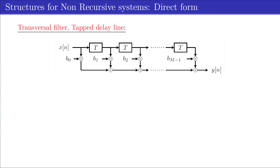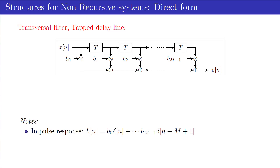The most common form of a non-recursive filter is the so-called transversal filter, or tap delay line, as depicted in the figure. Because of the finite length of the filter and since there are no feedback loops, the coefficients of the impulse response Hn are the same as the coefficients of the filter.